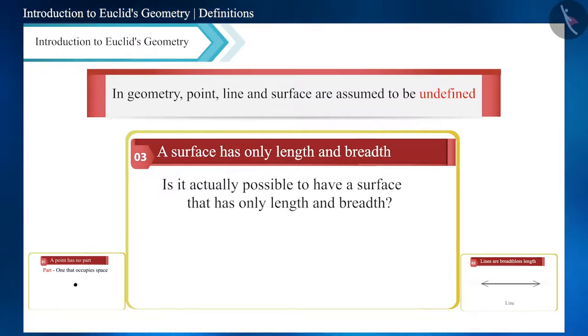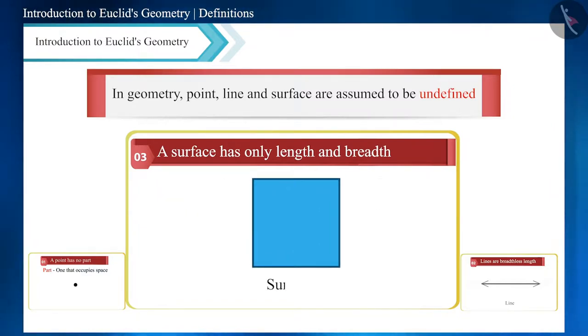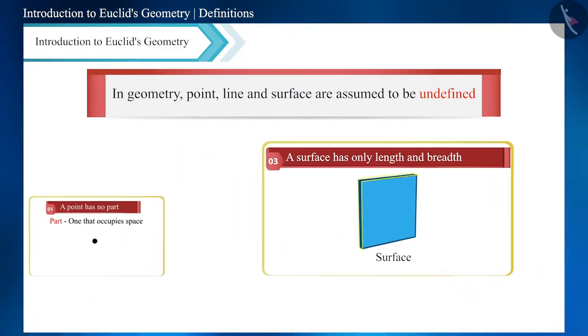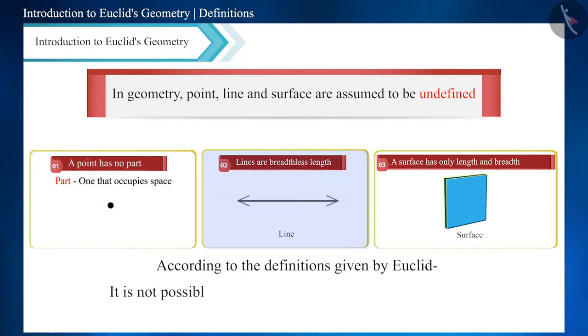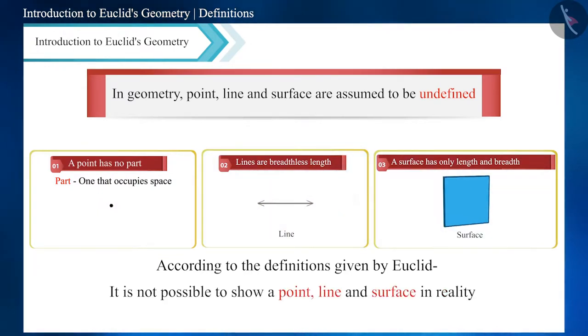No matter how thin a surface we take, it will have some thickness. Looking at all these facts, we can say that according to the definitions given by Euclid, it is not possible to show a point, the breadth of a line, and the thickness of a surface in reality. Therefore, in geometry, point, line, and surface—that is, plane—are assumed to be undefined.